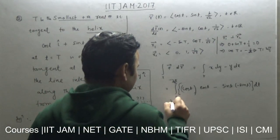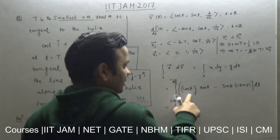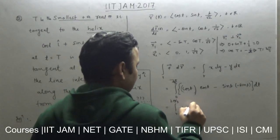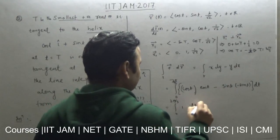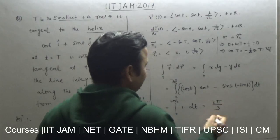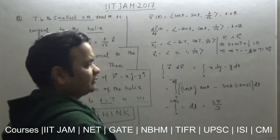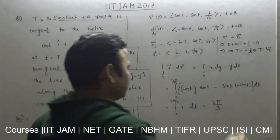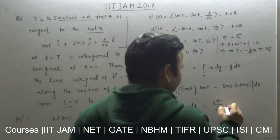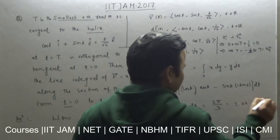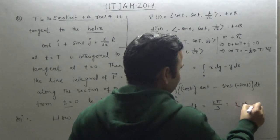This simplifies to the integral from 0 to 2π/3 of (cos²t + sin²t) dt, which equals the integral from 0 to 2π/3 of 1 dt. So the answer is 2π/3, which is approximately 2.09.